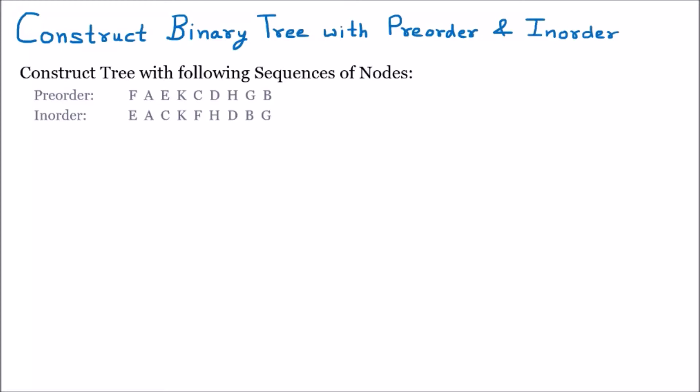We are discussing a question where we have to construct the binary tree with the pre-order and the in-order. The examiner can also give the post-order and in-order — the procedure will be totally the same. The key thing to understand is that in-order is required for constructing the binary tree. With the in-order, it can be combined with either pre-order or post-order. We are discussing the question that says: construct the tree with the following sequences of nodes.